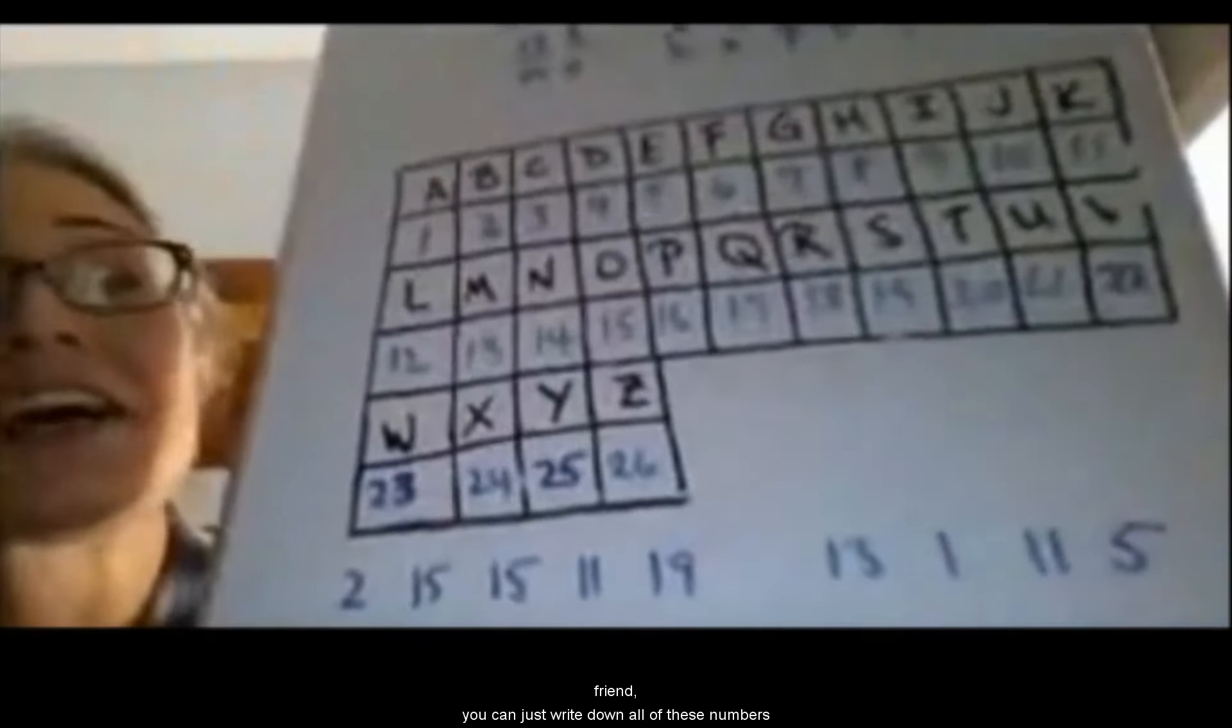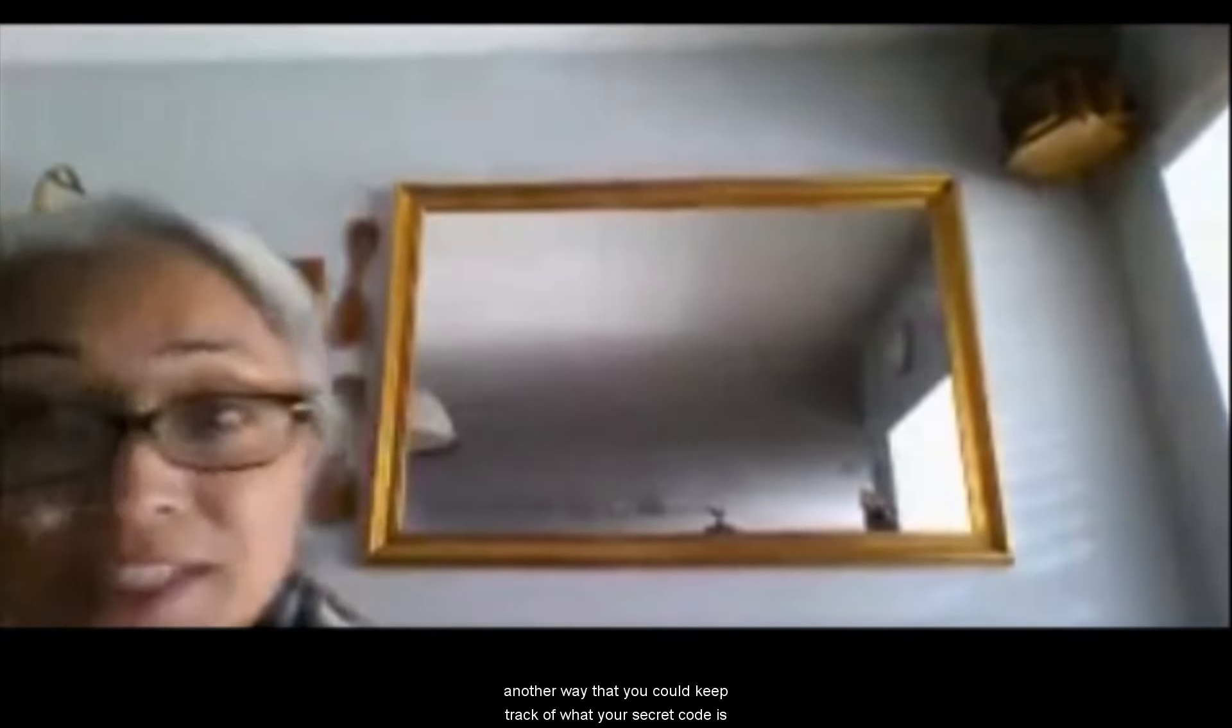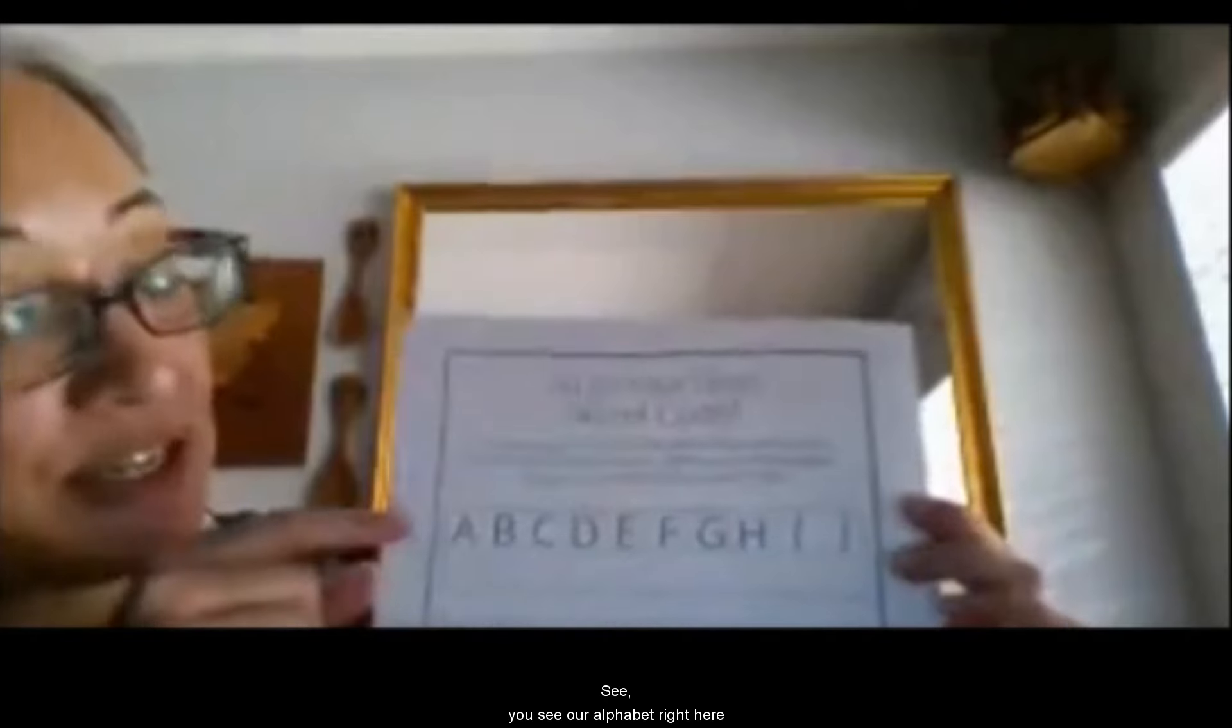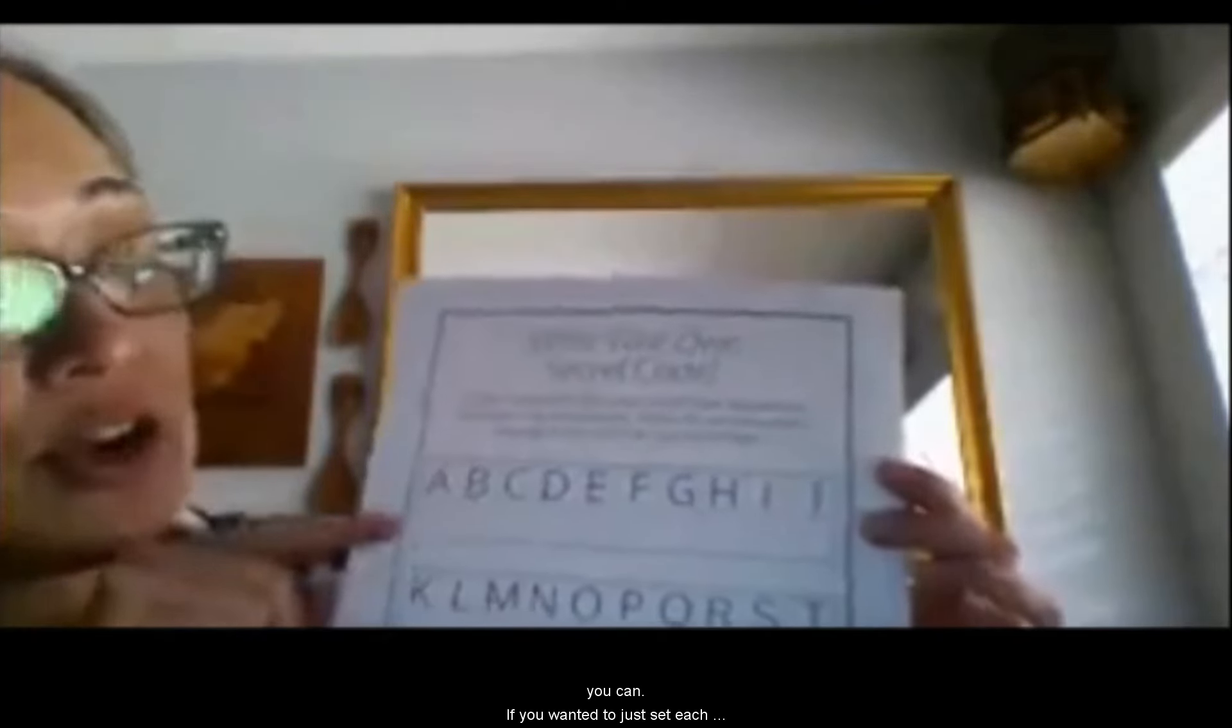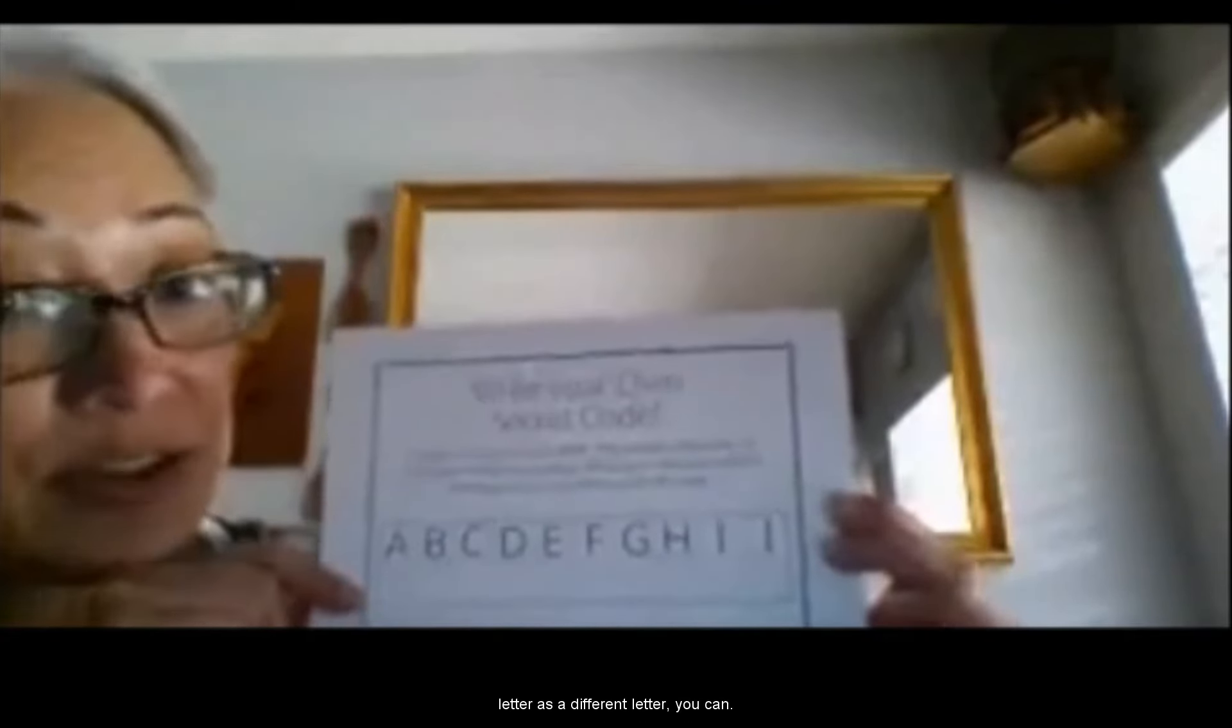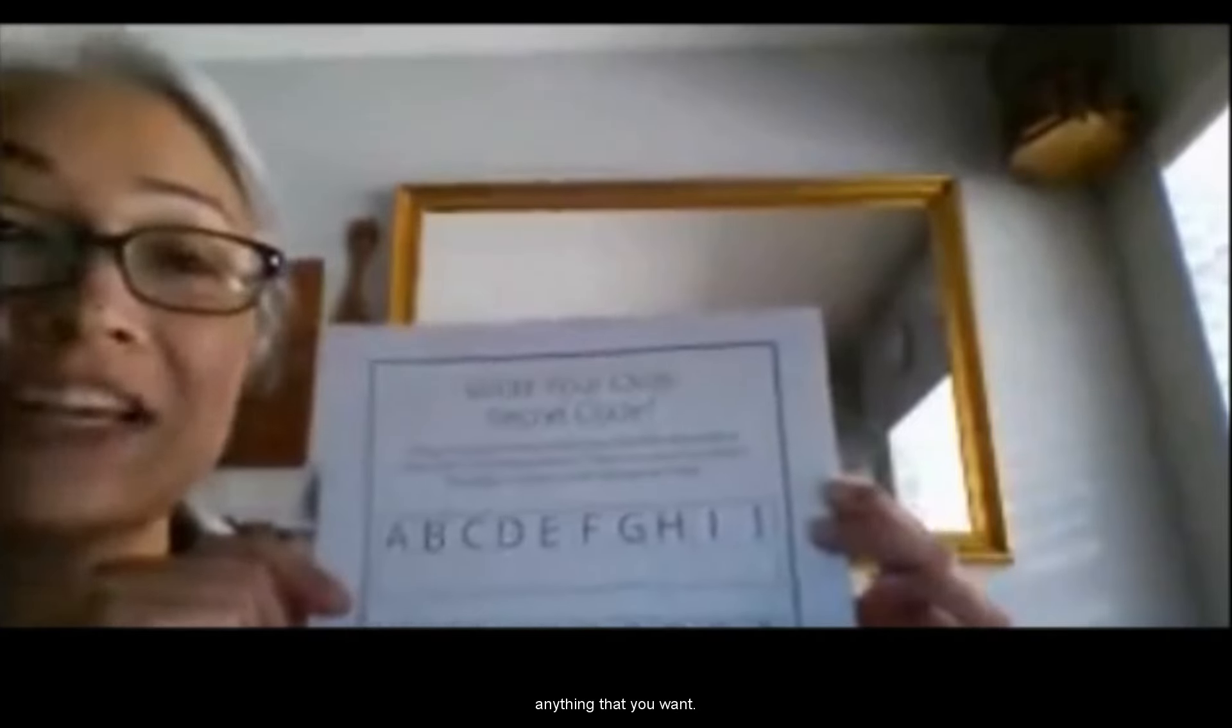So if you wanted to send books make me happy as a secret message to a friend, you can just write down all of these numbers. And another way that you could keep track of what your secret code is, is if you use something that looks like this, which you can also find online. So you see our alphabet right here, and there are empty boxes right underneath them. So if you wanted to draw a picture of each letter, you can. If you wanted to just set each letter as a different letter, you can. You can put numbers there like we just did. Anything that you want. Secret codes can be a lot of fun.